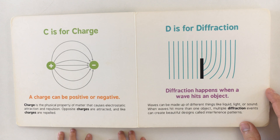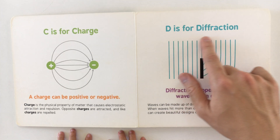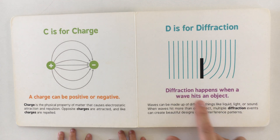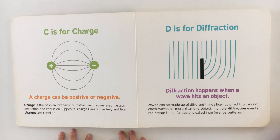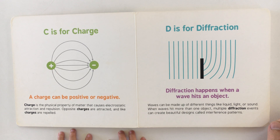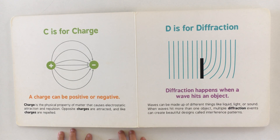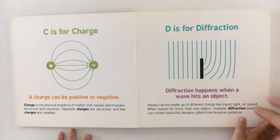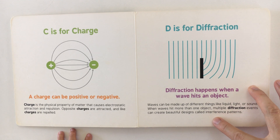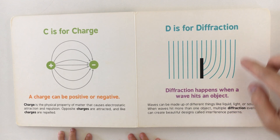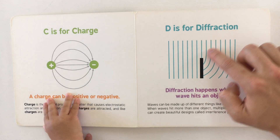D is for diffraction. Diffraction happens when a wave hits an object. Waves can be made up of different things like liquid, light, or sound. When waves hit more than one object, multiple diffraction events can create beautiful designs called interference patterns — these are interference patterns over here.